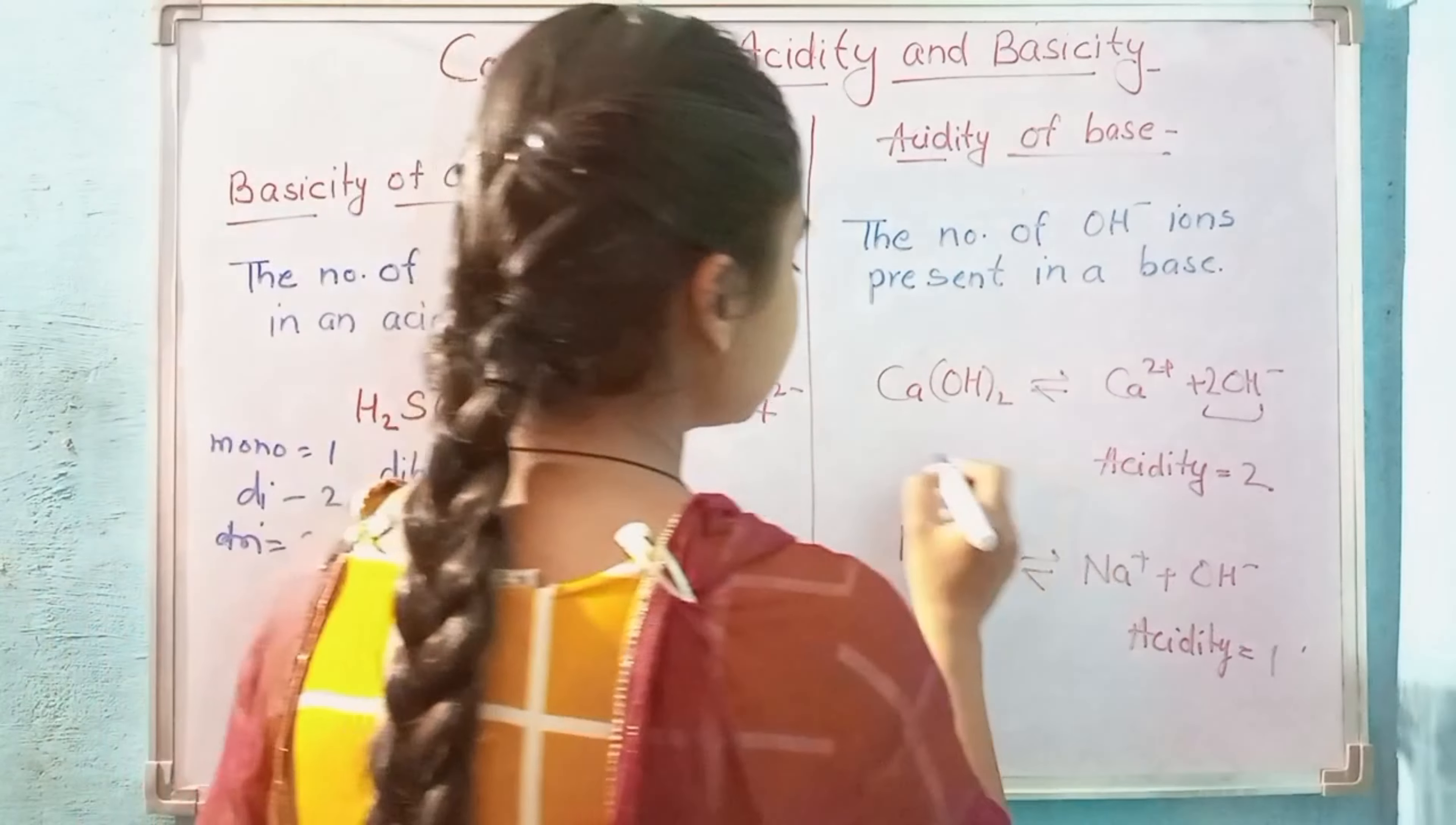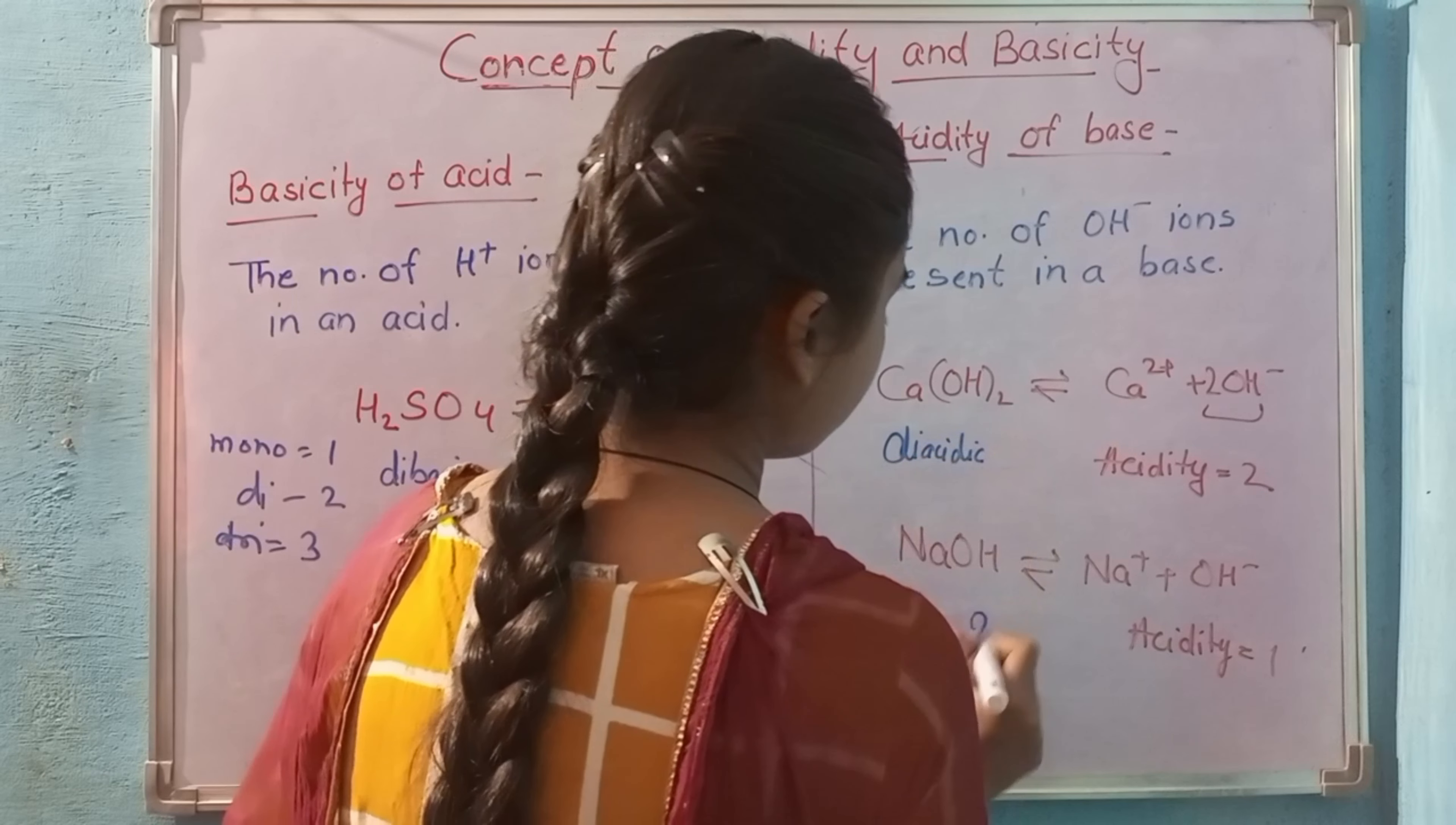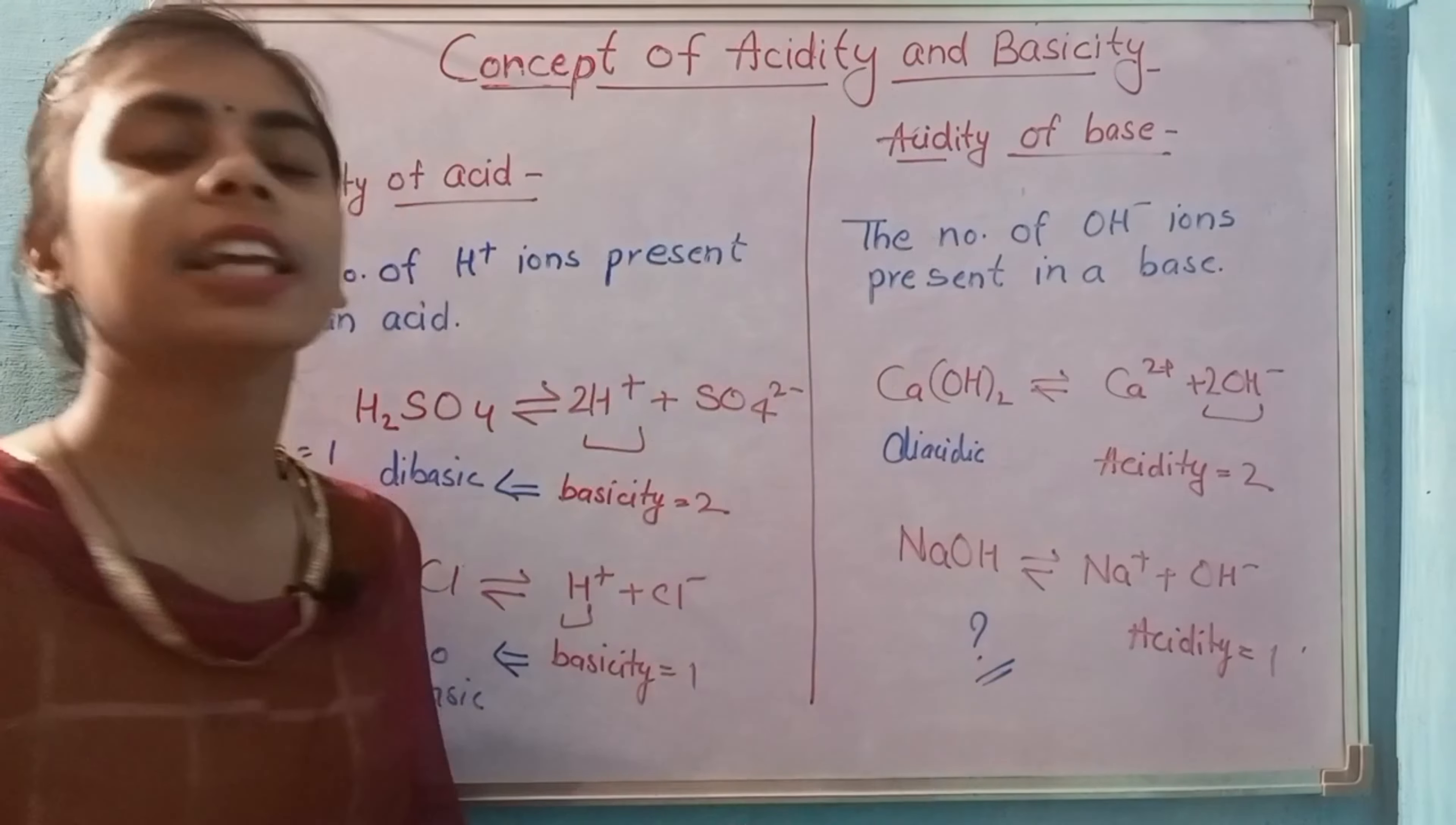Similarly, whoever has acidity 2 will be called di-acidic, and whoever has acidity 1 will be called mono-acidic.